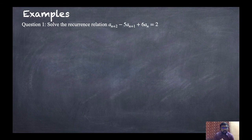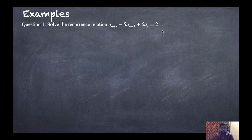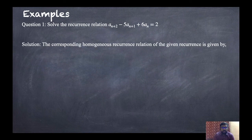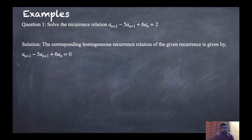The first example: solve the recurrence relation AN+2 minus 5·AN+1 plus 6·AN equals 2. Here the right-hand side is not equal to 0, so it is a non-homogeneous equation. We need to find a homogeneous solution as well as a particular solution. The corresponding homogeneous recurrence relation is obtained by setting the right-hand side equal to 0.